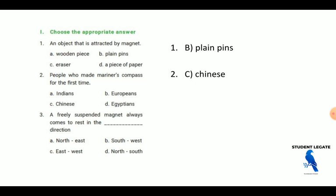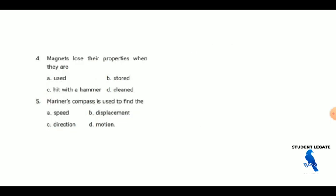Freely suspended magnet always come under the rest of dash direction. The magnet lost their property when they are used, stored, hidden the magnet are cleaned. The answer is hidden the magnet. If you hit a magnet, you will hit the hammer. So if you hit the magnet, in the moon the magnetic property lost.